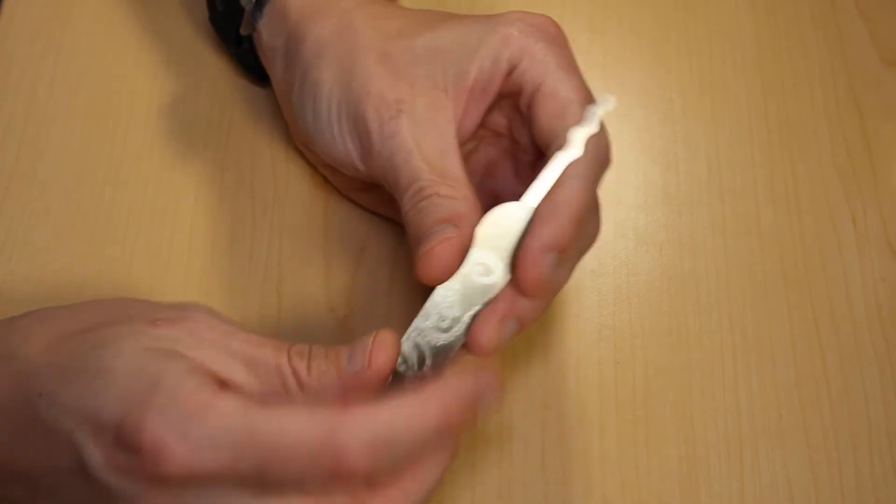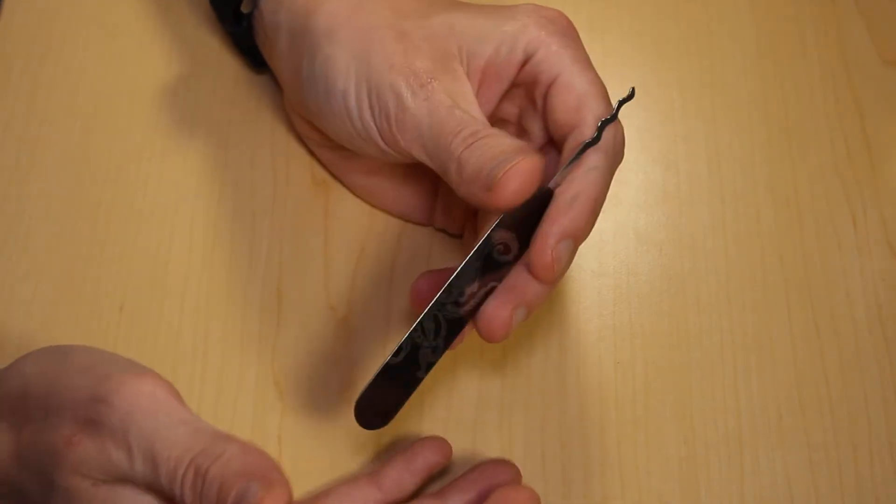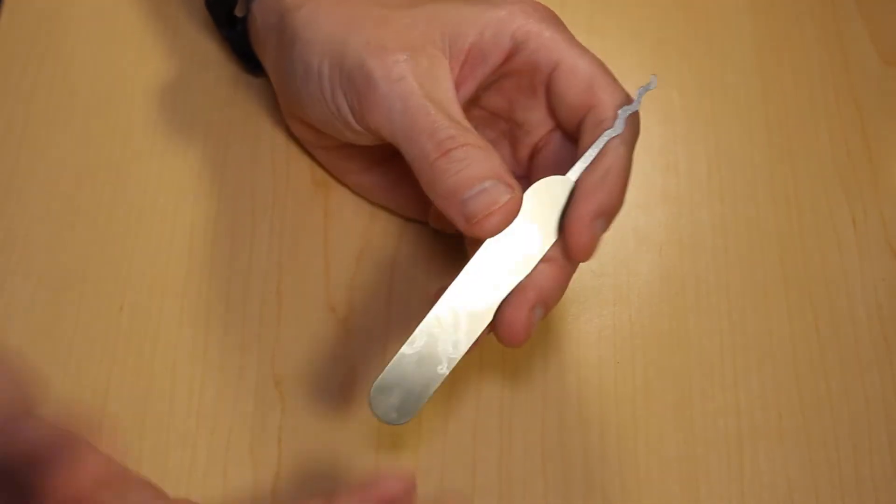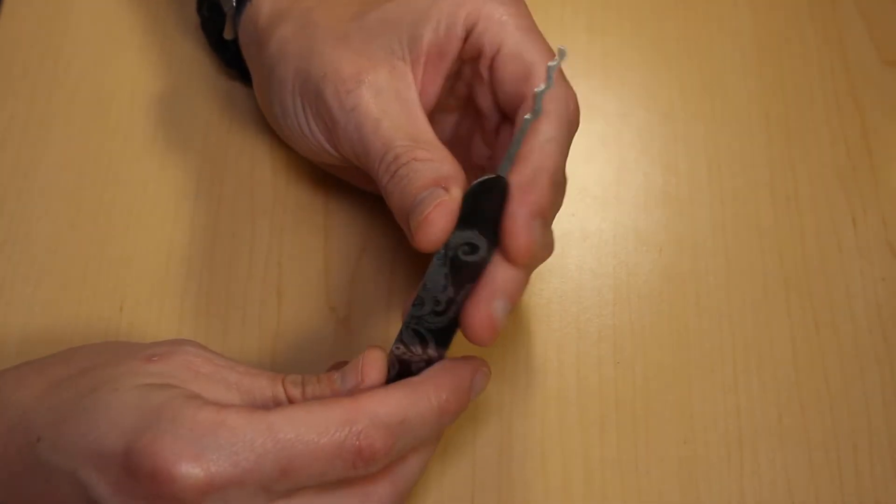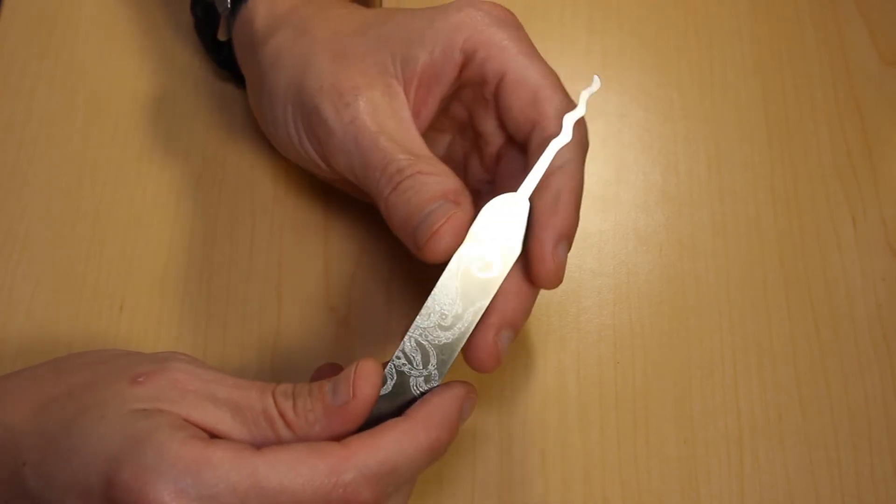There's locks that I can open with this that I can't open with the worm rake, and vice versa. There's locks I can open with the worm rake that I cannot open with this. So it is something different and a little bit unique.